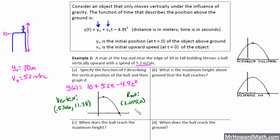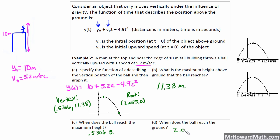That answers several questions. Part B: what is the maximum height above the ground the ball reaches? That's our vertex y-coordinate: 11.38 meters. Part C: when does the ball reach the maximum height? That's the vertex x-coordinate, which is time: 0.5306 seconds approximately. Part D: when does the ball reach the ground? That's the root — when height is zero, it happens at 2.055 seconds.